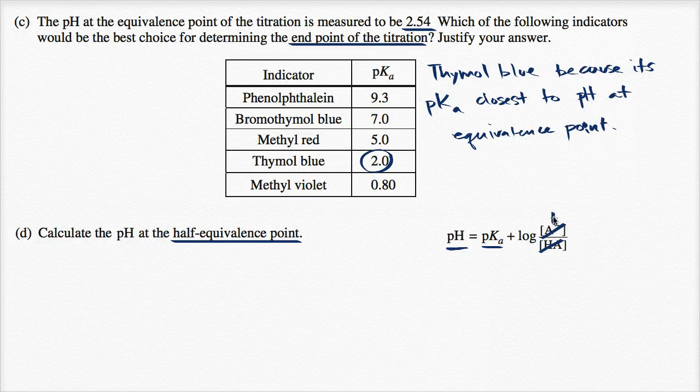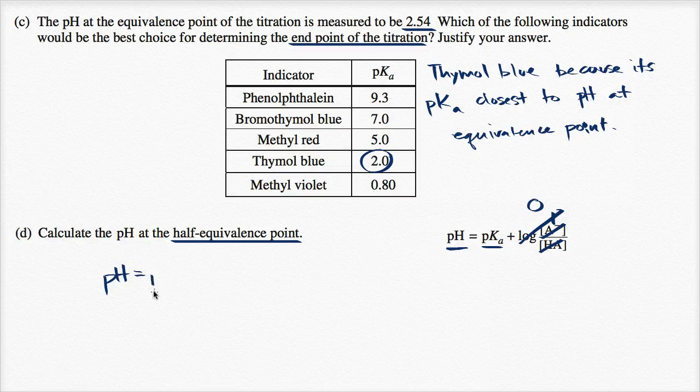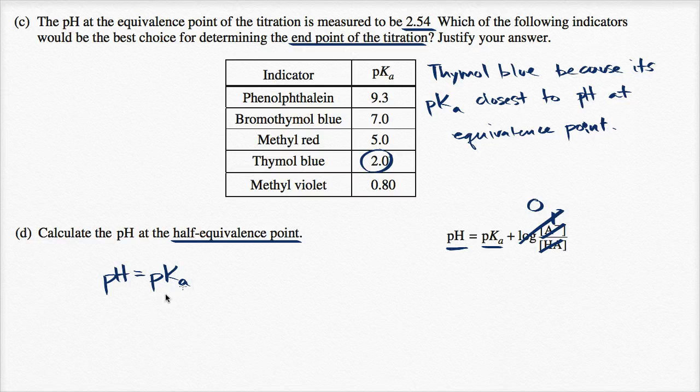And log of one is just going to be zero. So at the half equivalence point, the pH is going to be equal to the pKa.